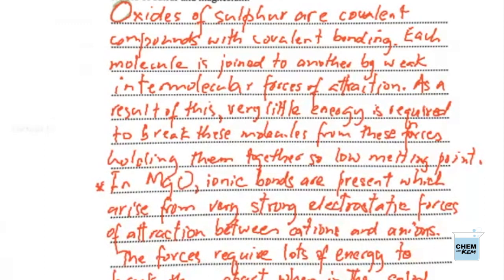For the oxides of sulfur, these are covalent compounds. The intramolecular bond is covalent. Each molecule is joined to another by weak intermolecular forces of attraction. As a result, very little energy is required to break these molecules from the forces of attraction holding them together in the solid state. So they have a very low melting point of negative 72 degrees Celsius.